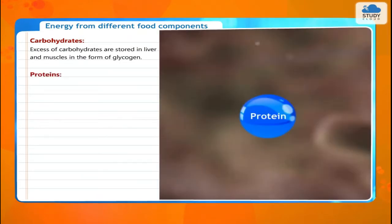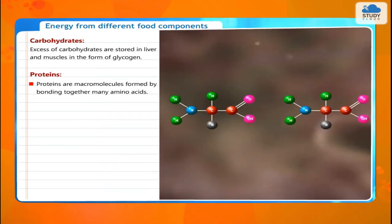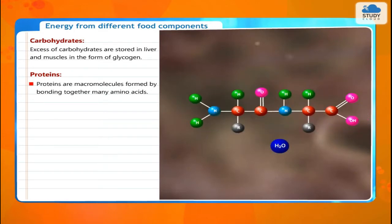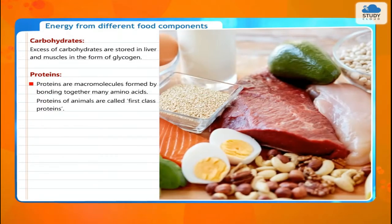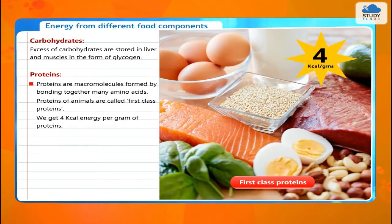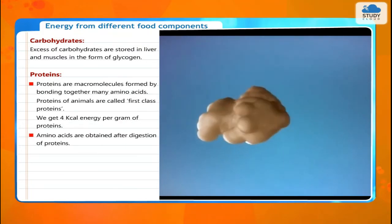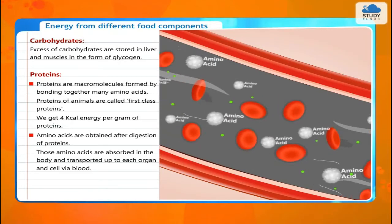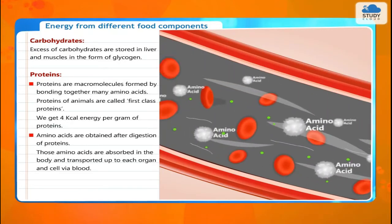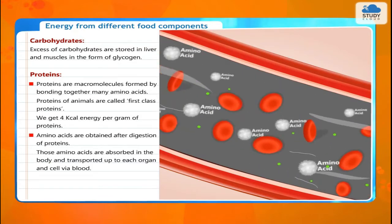Proteins are macromolecules formed by bonding together many amino acids. Proteins of animals are called first class proteins. We get 4 kilocalories of energy per gram of protein. Amino acids are obtained after digestion of proteins.